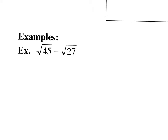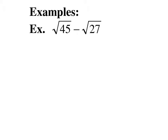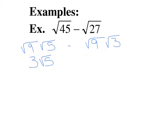For square root of 45 minus square root of 27, we simplify first. 45 is 9 times 5, and square root of 9 is 3, giving 3 square root of 5. 27 is 9 times 3, and square root of 9 is 3, giving 3 square root of 3. It turns out these are not like radicals — one has square root of 5 and the other has square root of 3 — so the simplified answer is 3 square root of 5 minus 3 square root of 3.